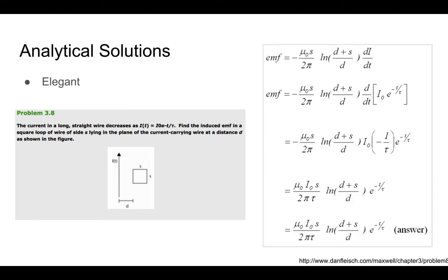Maxwell equations are really elegant in this way. For example, this problem asks for the EMF produced in a square loop of wire by a current-carrying wire. We can easily utilize the Maxwell equation and find an analytical solution — a formula that describes continuous values.